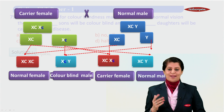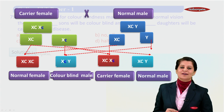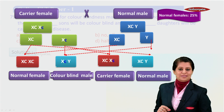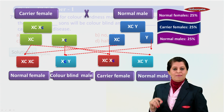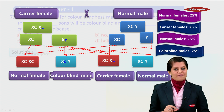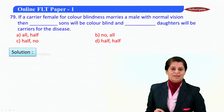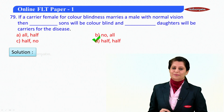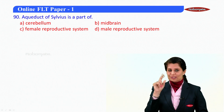The last combination is X^C and Y — a normal male with no disease gene present. So out of these four: 25% normal females, 25% carrier females, 25% normal males, and 25% colorblind males. When asking how many sons will be colorblind and how many daughters will be carriers, the answer is half and half.